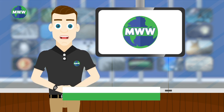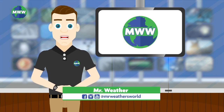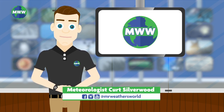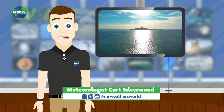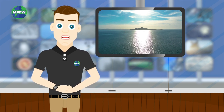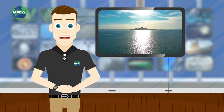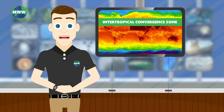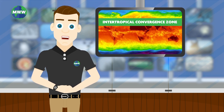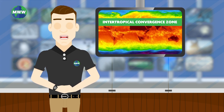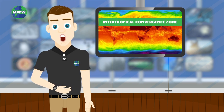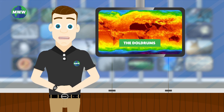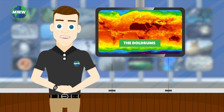Near the equator, trade winds of the northern and southern hemispheres converge. In this region, strong sun and warm water heats the air, raising humidity and making the air more buoyant. This region where this occurs is called the Intertropical Convergence Zone, and the doldrums by sailors.